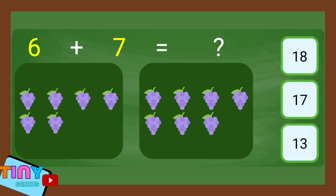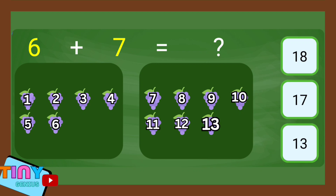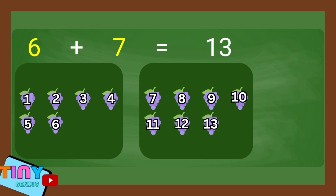6 plus 7 equal. 1, 2, 3, 4, 5, 6, 7, 8, 9, 10, 11, 12, 13.